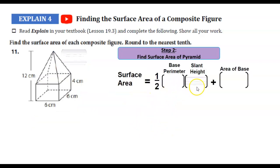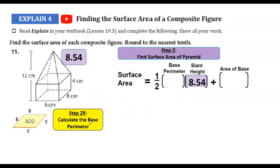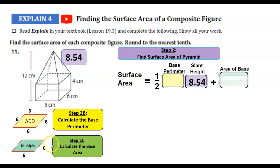All right, now that we know our slant length, let's go ahead and find our base perimeter. Take a moment and work that out. Now let's go ahead and find our base area. Take a moment and work that out.